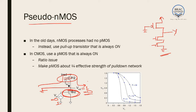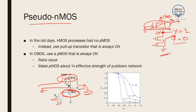Now, pseudo-NMOS representation has certain problems. There is no problem when the output Y is equal to one, because the current flows through the PMOS into the output. But when Y is equal to zero, in this node we have zero volts and in this node we have VDD volts. As a result, the entire voltage is across the PMOS and power is dissipated. In case of CMOS, the pull-up network would be open when output is zero, so no current flows and there is no power dissipated. But in case of pseudo-NMOS, even when the output is low, there will be current and there will be power dissipated.